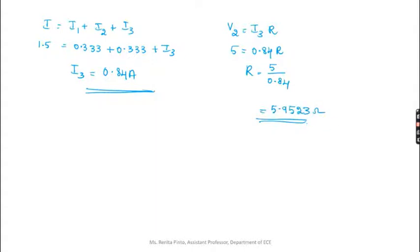Using V2 = I3 × R: 5 = 0.84 × R, so R = 5/0.84 ≈ 5.95Ω. This is how you use Ohm's law for series-parallel circuits. When you have more than two resistances, you work through each branch individually rather than using voltage or current divider rules directly.